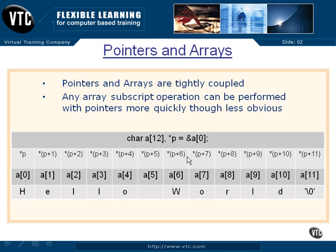So these are array subscripts, and these are pointers with integers added to them to subscript the array and go up and down it. This will be faster in the code because the code is able to optimize itself to make better decisions if you use this sort of subscript. But it's just as good — we're working on pretty fast machines now, so it's okay to use bracket notation with a variable to work your way up and down an array. Pointers and arrays are tightly coupled because a pointer is doing the same thing as an array name and subscript, and any array subscript operation can be performed with pointers more quickly.